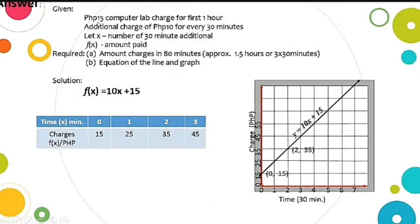So the answer. Given information: 15 pesos computer lab charge for first hour and additional charge of 10 pesos for every 30 minutes. So our independent variable, this x, is the number of 30 minutes additional. And then f(x) is the amount paid or charges. The required is amount charged in 80 minutes, which is approximately 1.5 hours or 3 times 30 minutes.